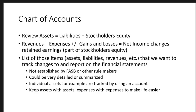We're going to make a chart of accounts of the things that we want to track. It's simply a list of those items — those assets, those liabilities, etc. — that we want to track the changes to. We have to decide how detailed we want to be: do we want lots of different expenses, or do we want to lump them together and summarize? Do we want lots of different asset categories or just a few?